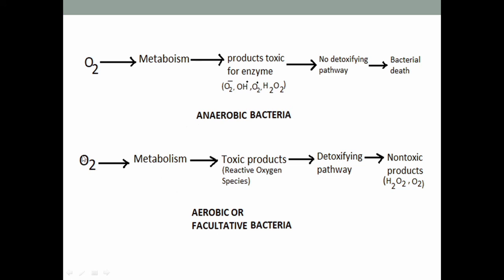In aerobic organisms, oxygen from the environment is also used in metabolic functions, which also leads to formation of reactive oxygen species — toxic products in aerobic organisms as well. However, aerobic and facultative bacteria have a detoxifying pathway which includes enzymes such as superoxide dismutase, catalase, and peroxidase, which neutralize these reactive oxygen species and produce non-toxic products — that is, H2O and oxygen gas. In this way aerobic organisms can survive in presence of oxygen, but anaerobic organisms cannot survive because they lack this detoxifying pathway.